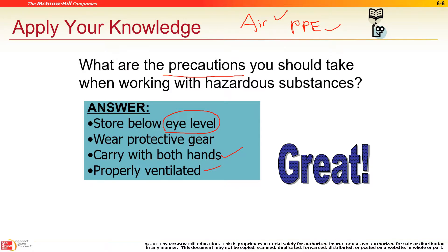When diluting or mixing substances, do you put the hazardous stuff into the benign stuff, or the benign into the hazardous? If it's water and acid, pour the acid into the water — that way, if anything splashes, it's mostly water.